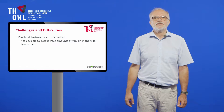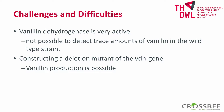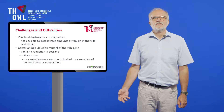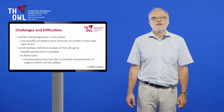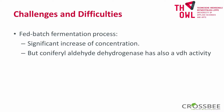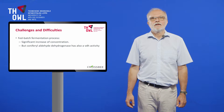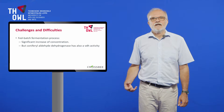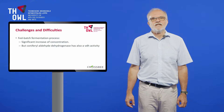By construction of a deletion mutant of the VDH gene, it was possible to produce vanillin. In the flask scale, the concentration was very low due to the limited concentration of eugenol which can be added. In a carefully controlled fed-batch process, it was possible to increase the concentration significantly. However, the problem remains that coniferyl aldehyde dehydrogenase also has VDH activity.